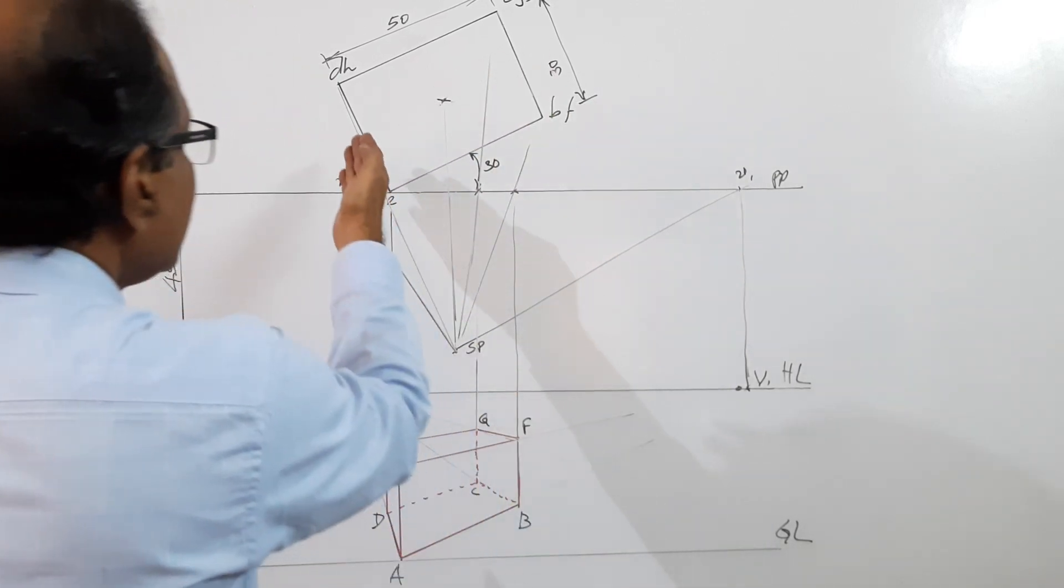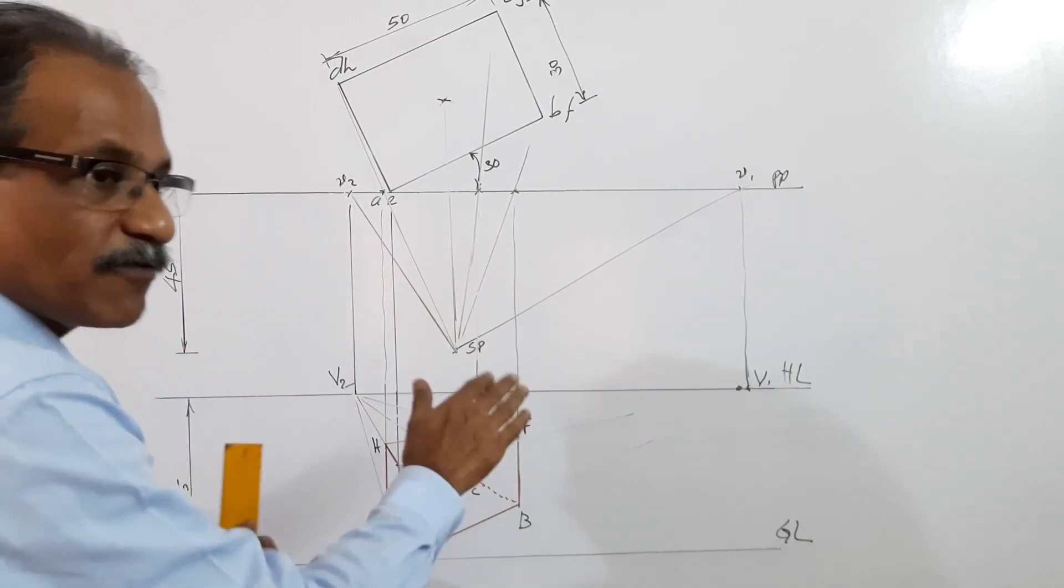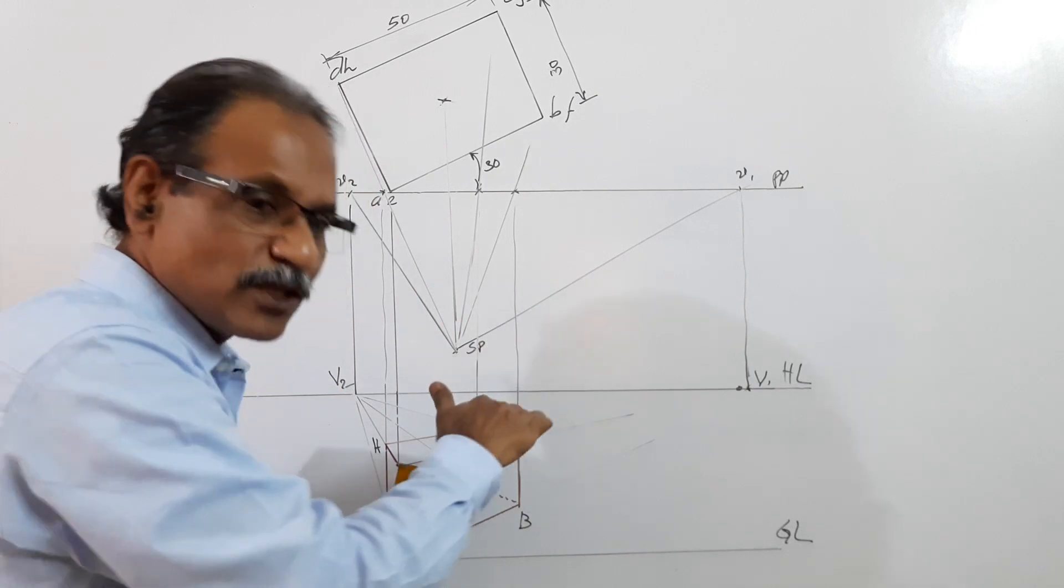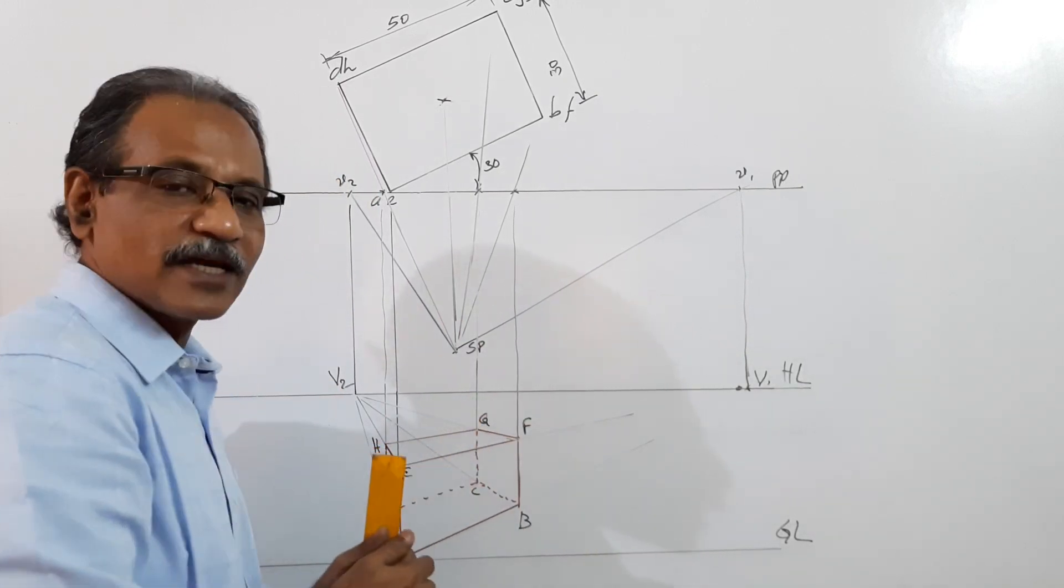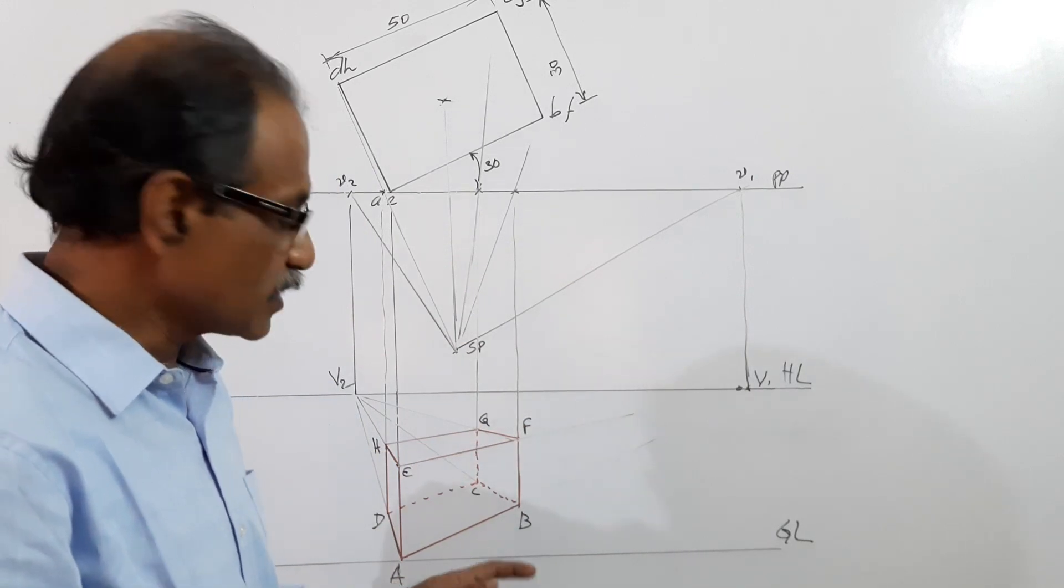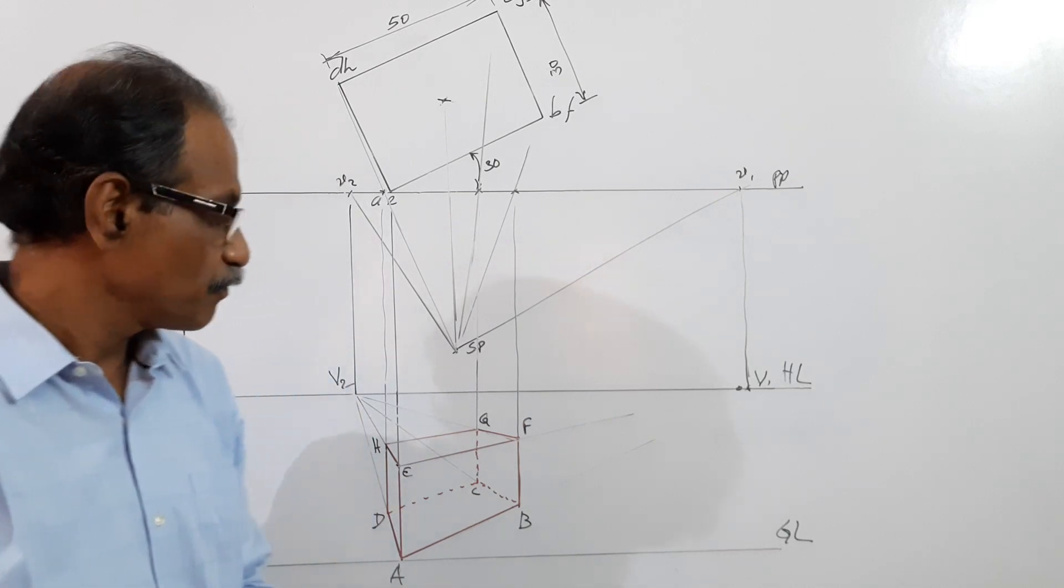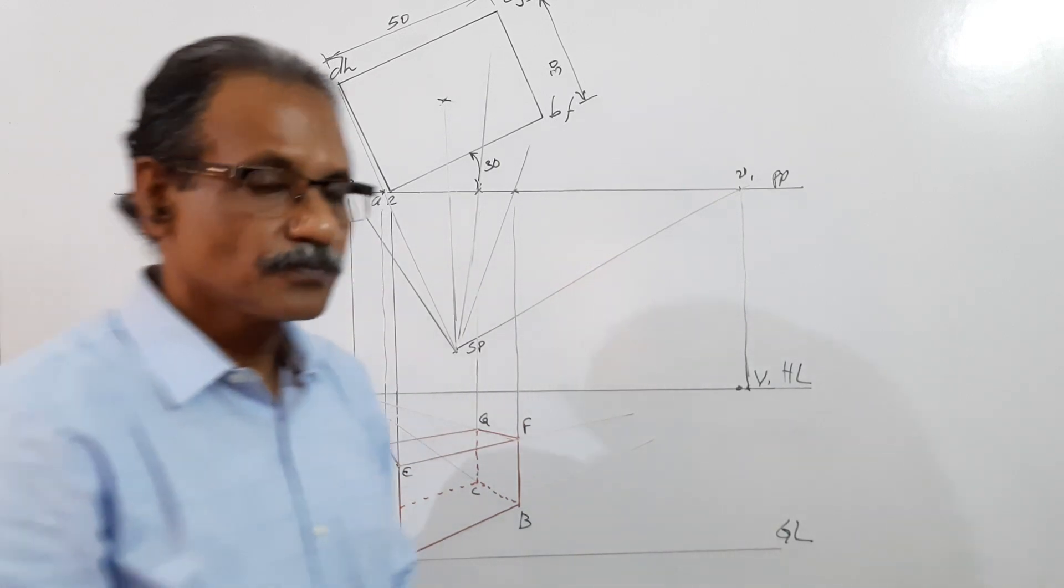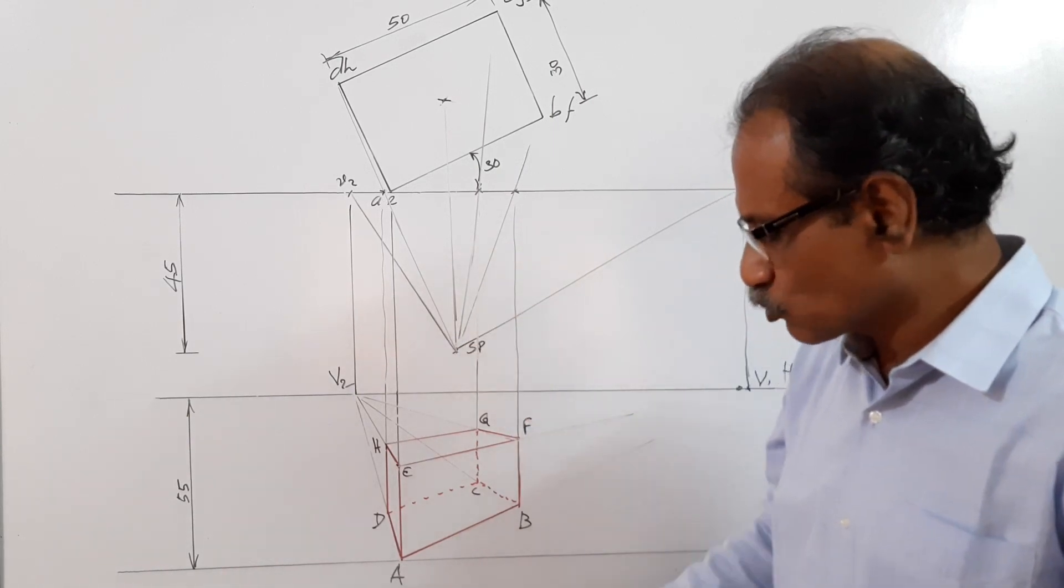BF is on the right side, right boundary. DH is the left boundary. The corner C is far away from the observer, behind the object, so CB, CD, and CG are invisible and hence dotted. The far away corner C is not visible, so the three lines leading to C are dotted.